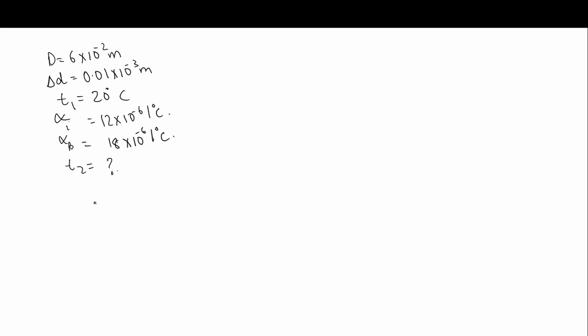Now on heating, both of them will expand. So we need to use the formula delta D is equal to D alpha 2 minus alpha 1 into delta T. Because on heating, both of them expand, we can use this formula.